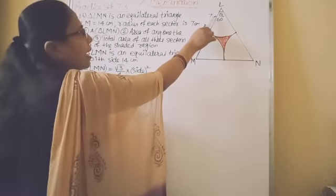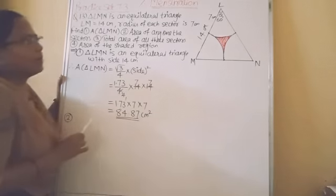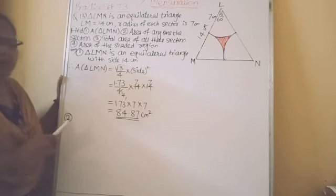So theta is given 7 cm, so theta equal to 60 and R is equal to 7. By taking this value we can find out area of sector.